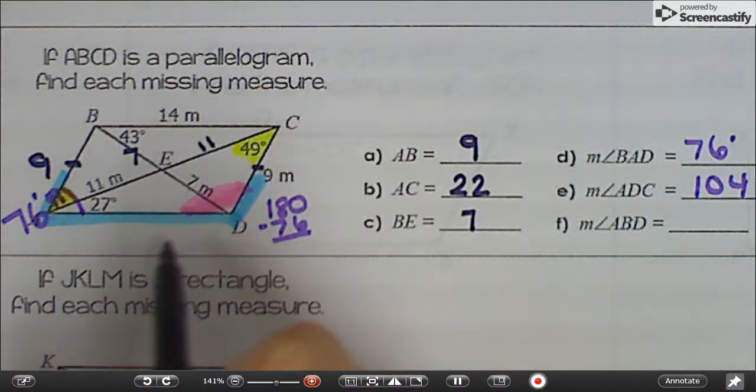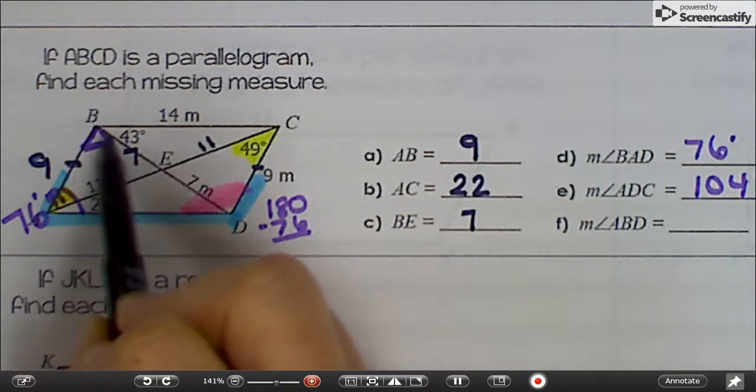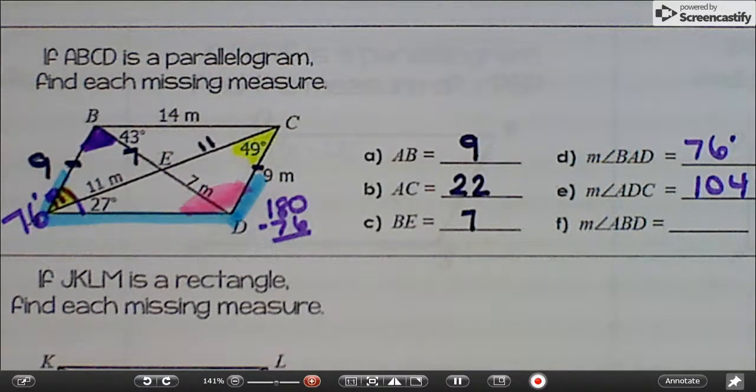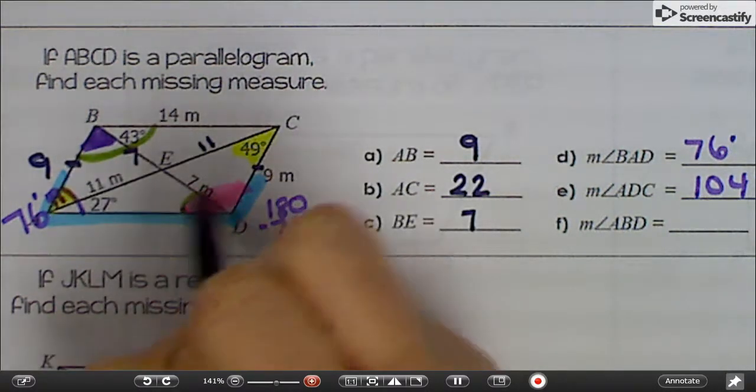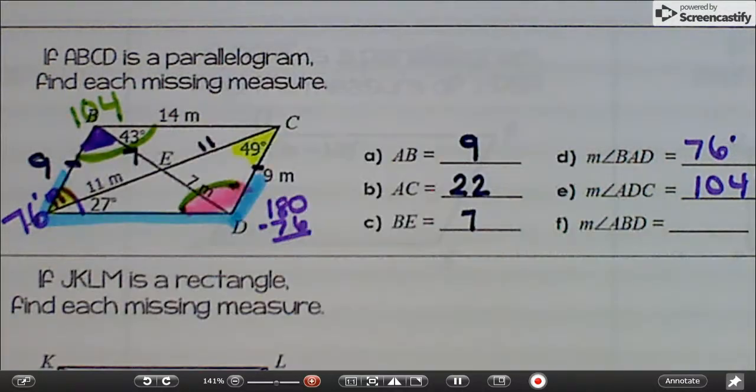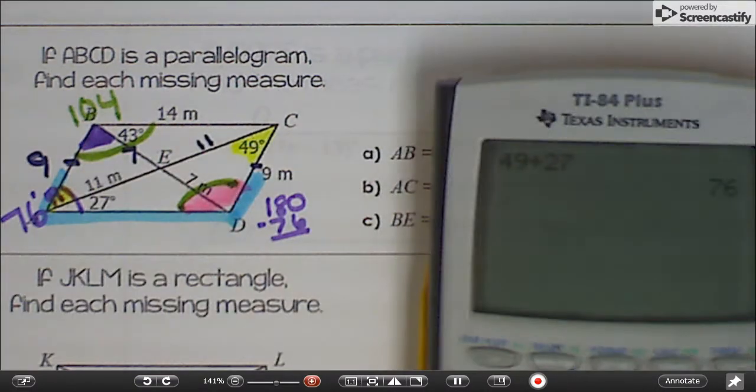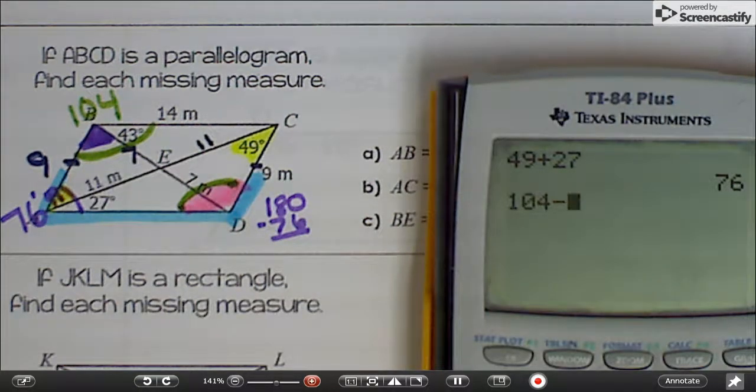The next one wants the measure of angle ABD, so just this part right here. Because we just talked about how in a parallelogram opposite angles are congruent, those two angles are the same. So this whole thing is 104. In order to find this side, we would just subtract 104 minus 43. So 61 degrees.